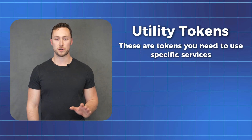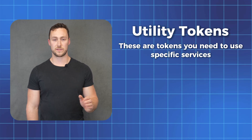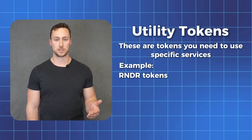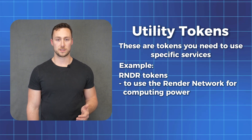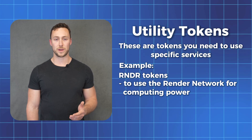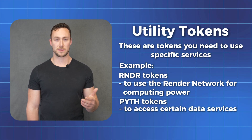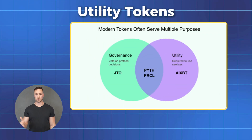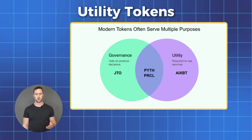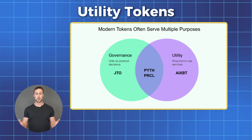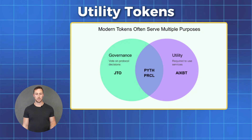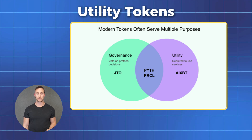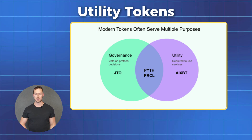Next, we have utility tokens. These are tokens that you need to use a specific service — it's like needing arcade tokens to play games. For example, you might need RNDR tokens to use the Render Network, which is a decentralized GPU computation network. Or you might need PYTH tokens to access certain data services from the PYTH Network. The token is your ticket to using the service. Quick note: many crypto tokens fit into multiple categories — the PYTH token, for example, is both a utility token and a governance token, and that's a good thing. Another example is BNB, which is both a network token for Binance Smart Chain and also a utility token on the Binance Exchange.